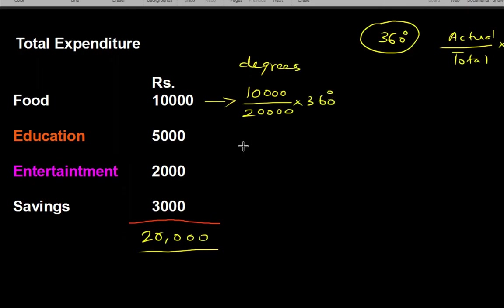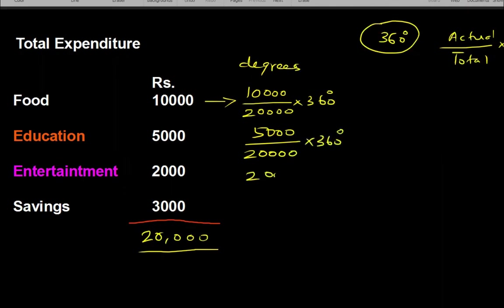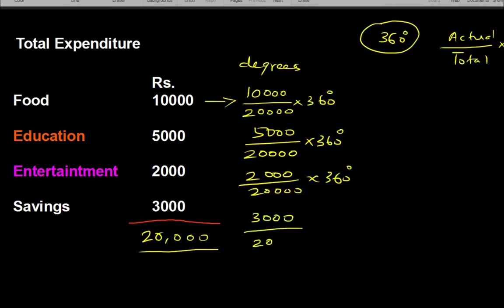For education, I have spent 5,000, so I'm going to do 5,000 divided by 20,000 into 360. Similarly, 2,000 divided by 20,000 into 360, and then 3,000 divided by 20,000 into 360.